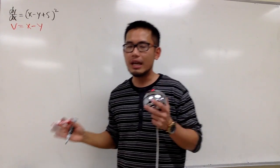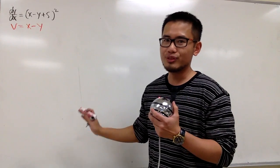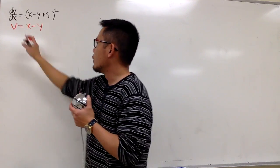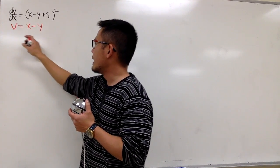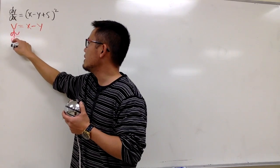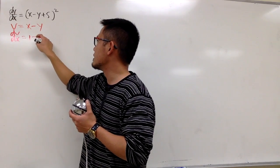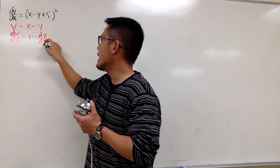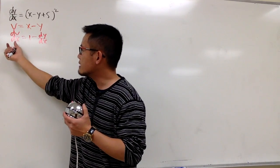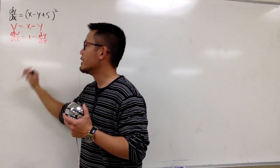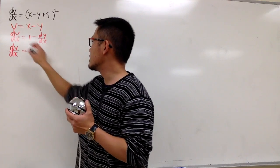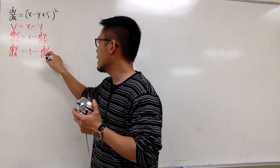If you want to end up with the answer in the back of the book, this is what you do. V equals x - y, so differentiating both sides gives dv/dx = 1 - dy/dx. Isolating dy/dx, we get dy/dx = 1 - dv/dx.